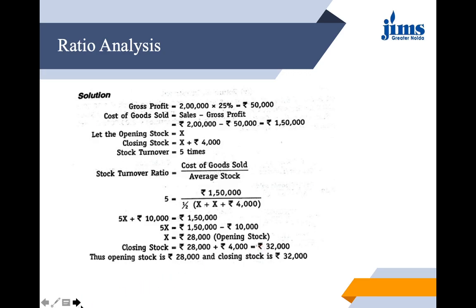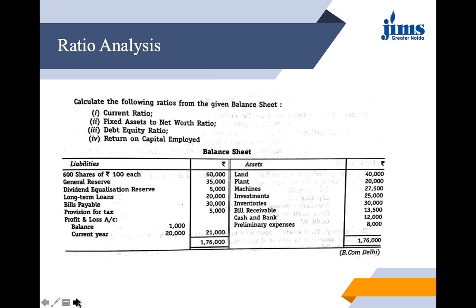There is another question where we need to calculate multiple ratios: current ratio, fixed assets to net worth ratio, debt equity ratio, and return on capital employed. We are given share capital, general reserve, dividend equalization reserve, long-term loans, bills payable, provision for tax, and profit and loss account balance for last and current year. On the asset side, we have fixed assets like land, plant, and machines, investments, inventories, bills receivable, cash and bank, and preliminary expenses.